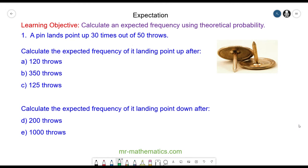From this information we can estimate an experimental probability of it landing point up. The desired outcomes is 30 out of our sample of 50. We can simplify this fraction by dividing both by 10, which makes three fifths.